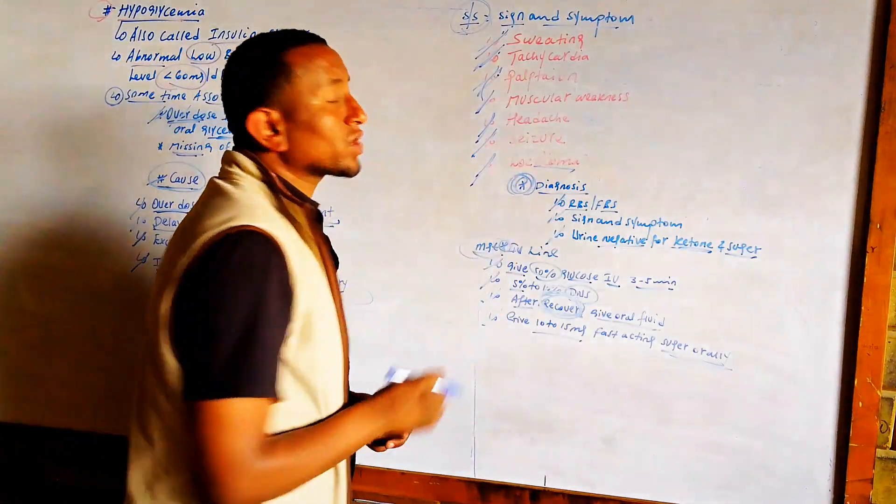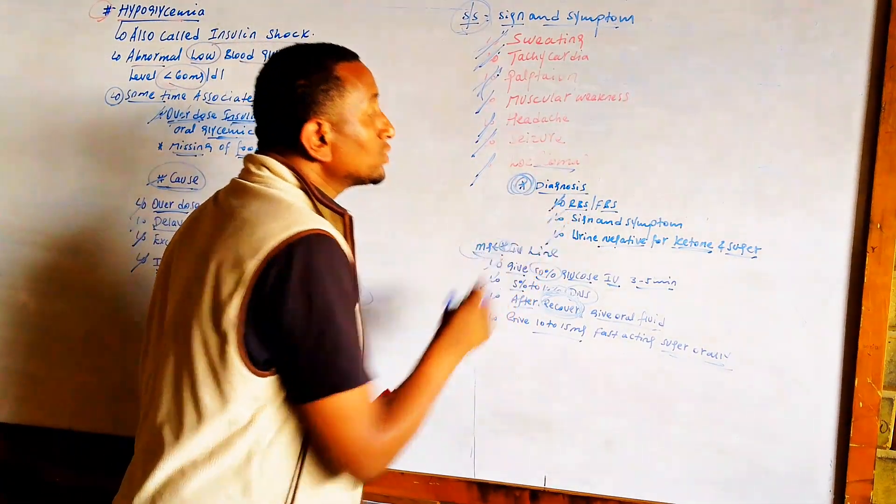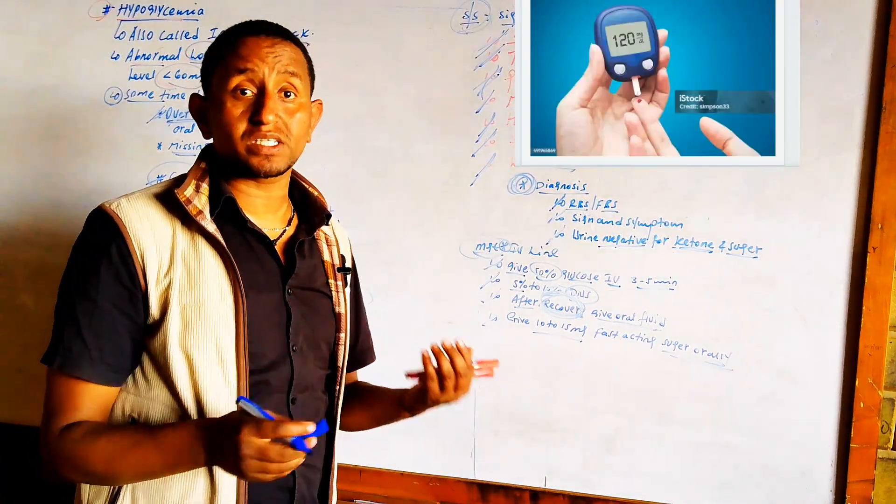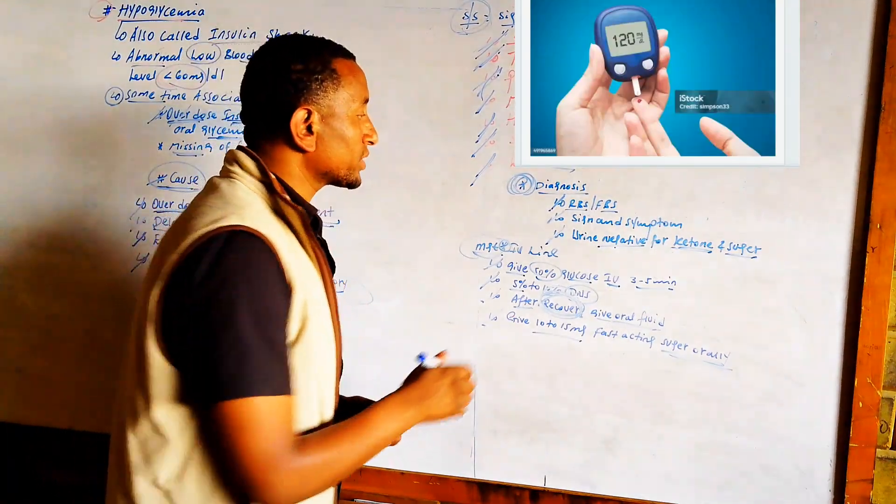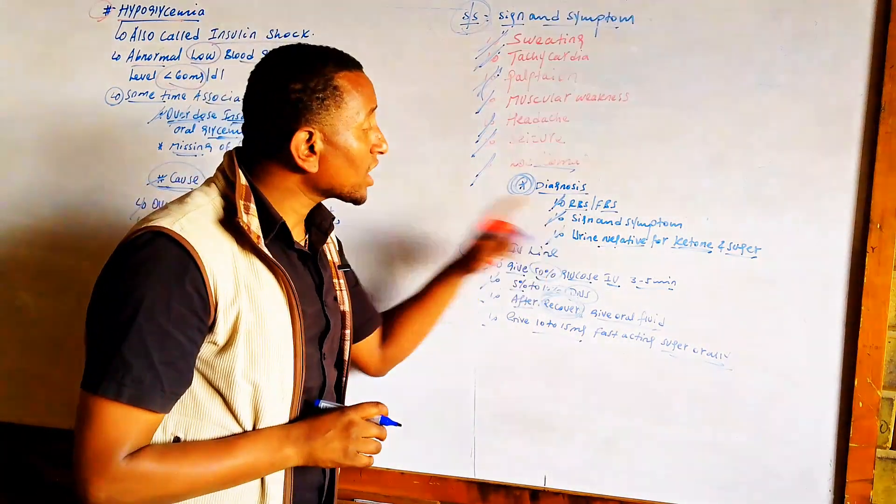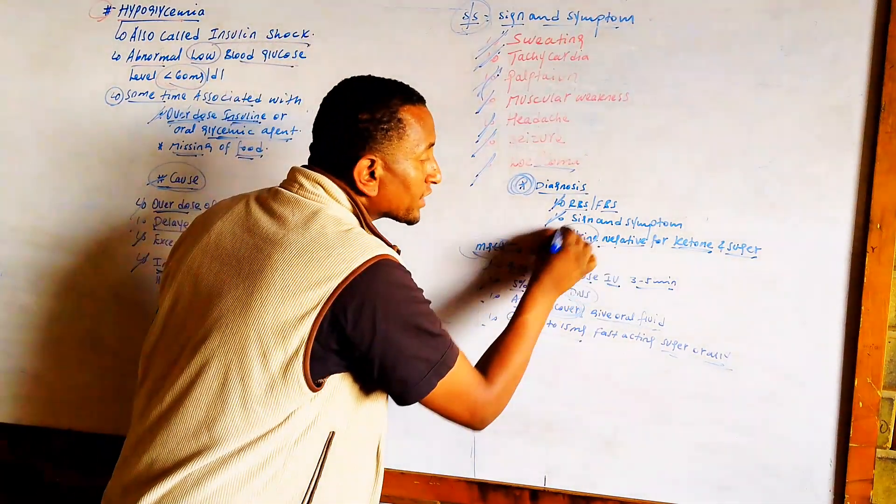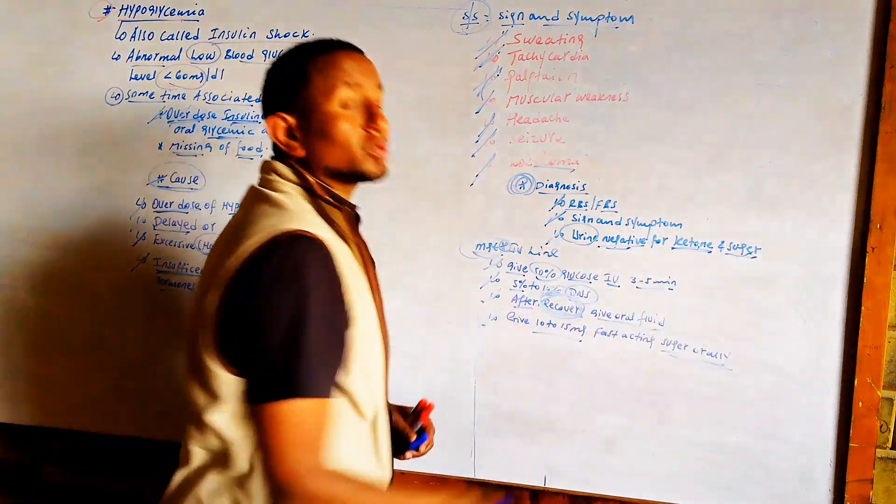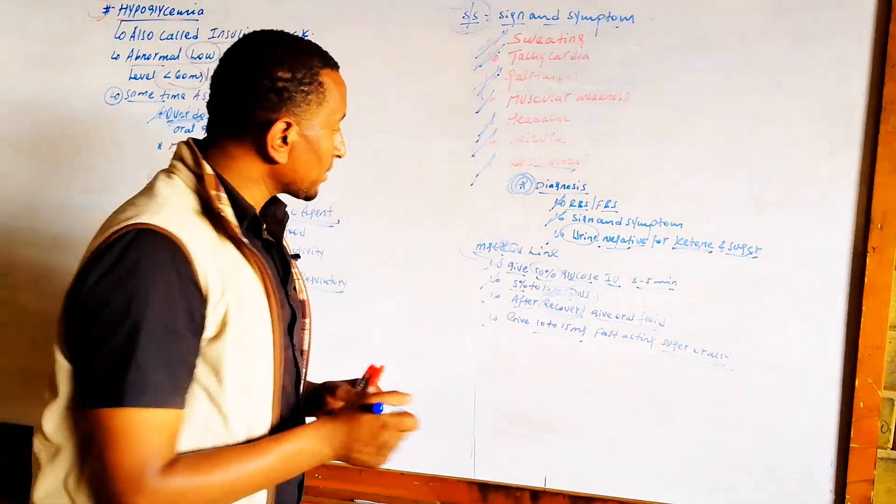How do they diagnose hypoglycemia? First, check blood glucose levels. Blood sugar levels will be less than 60 mg per deciliter. Check for signs and symptoms mentioned. Urine analysis is negative for ketone as well as sugar, which is one of the indicators for hypoglycemia.